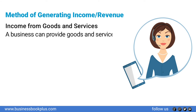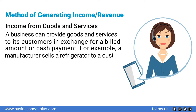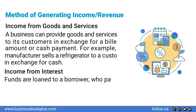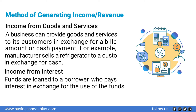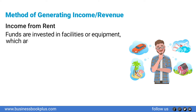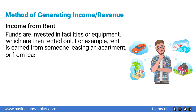Income from goods and services — a business provides goods and services to customers in exchange for a billed amount or cash payment; for example, a manufacturer sells a refrigerator to a customer for cash. Income from interest — funds are loaned to a borrower who pays interest in exchange for the use of the funds. Income from rent — funds are invested in facilities or equipment which are rented out, for example earning rent from leasing an apartment or a vehicle.